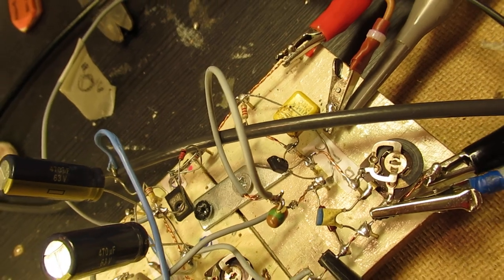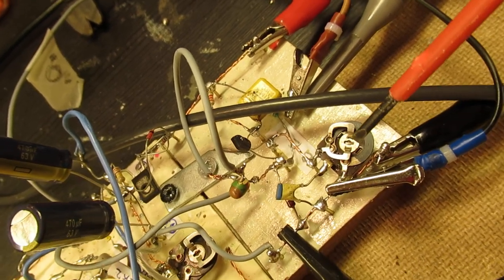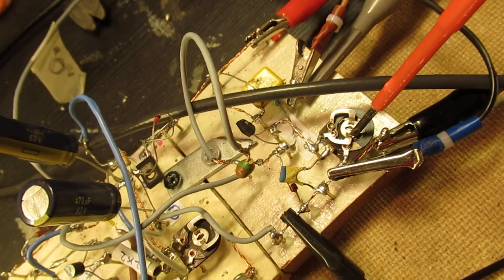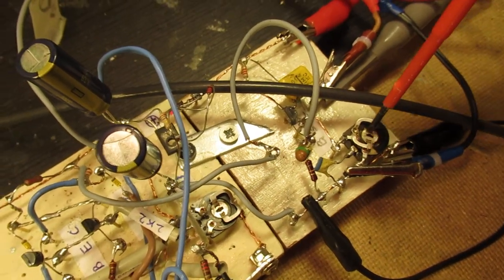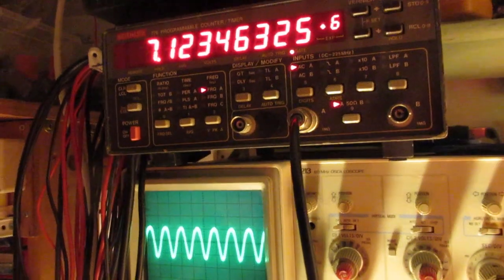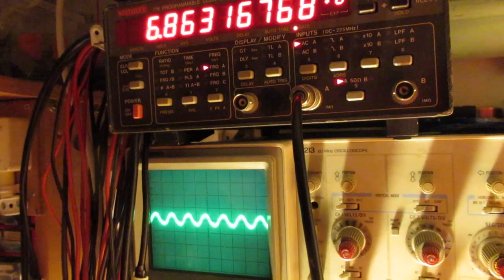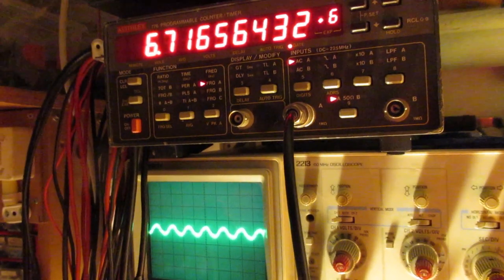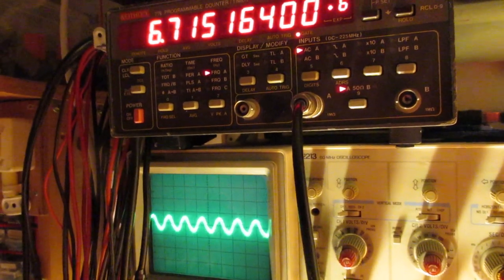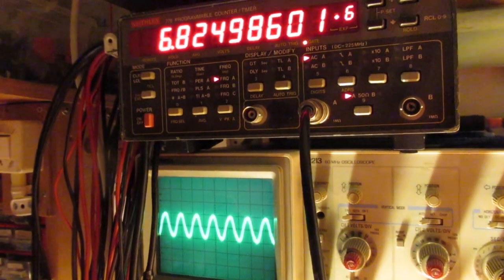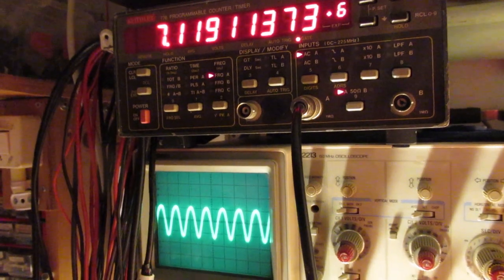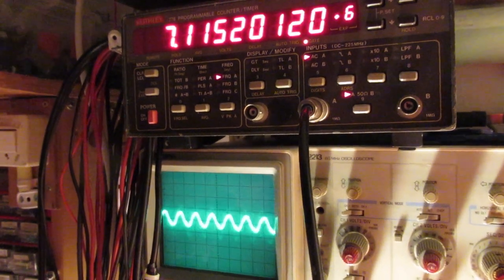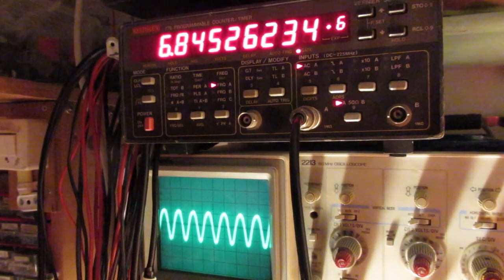Here that second stage made with the BF199 and here the potentiometer in the emitter lead. That sets the amplification and I will now change the amplification. You see a change in the frequency and in the amplitude.